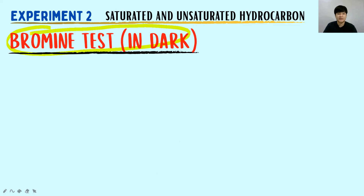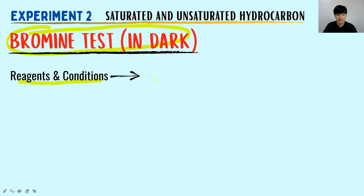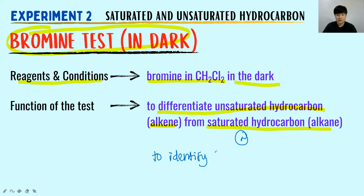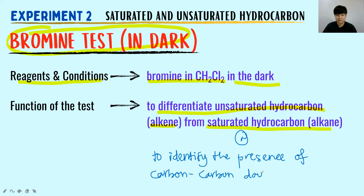Let's look at the bromine test in the dark. The reagent and condition used for the bromine test in the dark is bromine in dichloromethane (bromine in CH₂Cl₂), and the condition is in the dark. The function of this test is to differentiate the unsaturated hydrocarbon alkene from the saturated hydrocarbon alkane, or to identify the presence of a carbon-carbon double bond. Both sentences are acceptable.